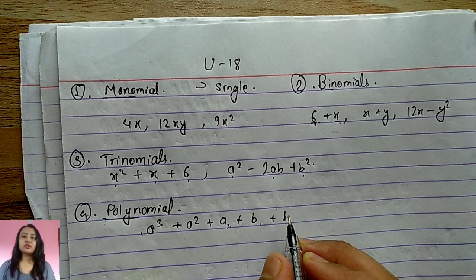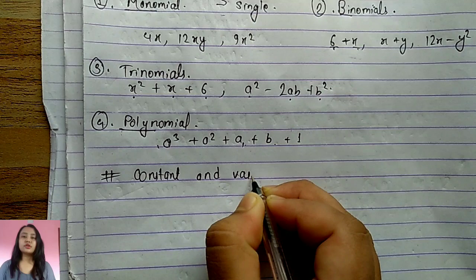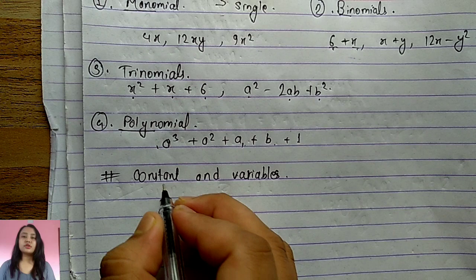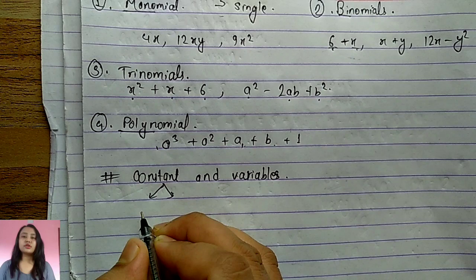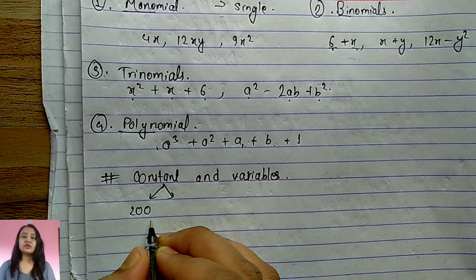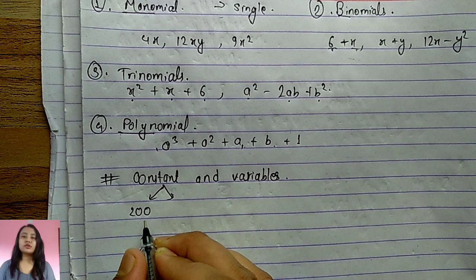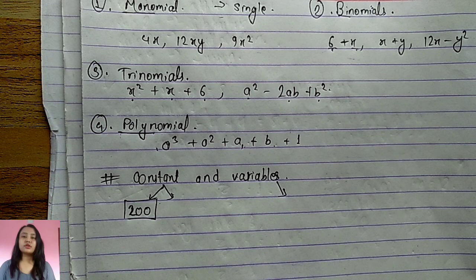Now let's talk about the difference between constants and variables. A constant has only one fixed value. For example, if the number of students in class six is 200 and no admissions are occurring, that value of 200 is constant because it won't change.